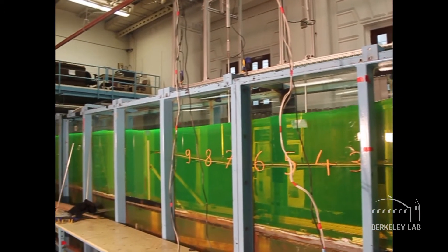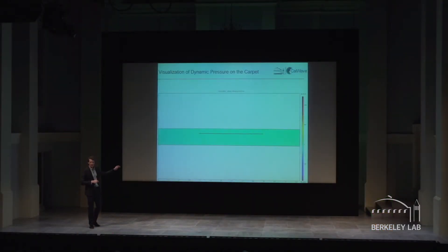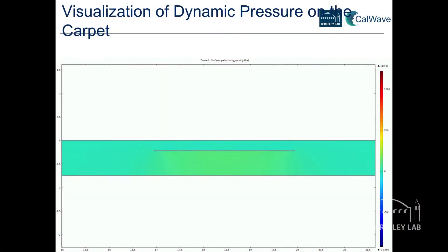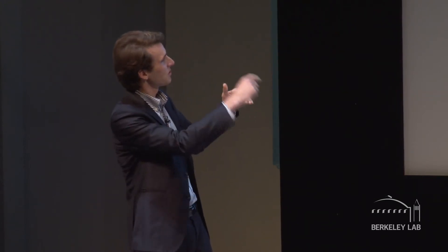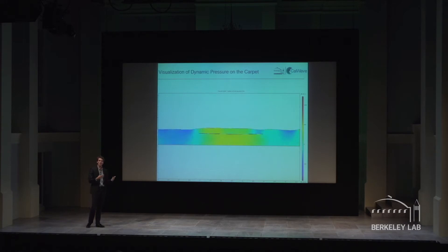We had fluorescent dye in there because we did visual wave height measurement. To better understand the physics behind, we used computational fluid dynamics, which allowed us to simulate the dynamic pressure and better understand the fluid-structure interaction. As the waves travel over the carpet, the orbital particle motions actually get split in half — we have two separate waves, and the upper one gets deeper. Because of this pressure difference between the upper and lower wave, similar to the pressure difference on an airplane wing, we can use this excitation force to generate power.